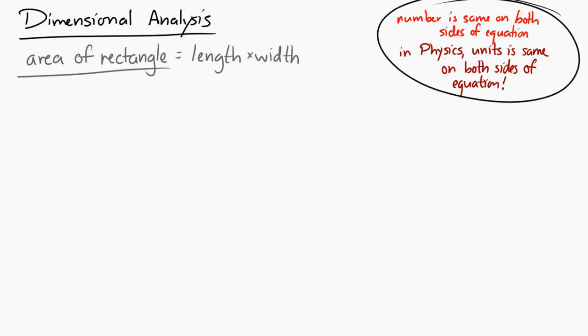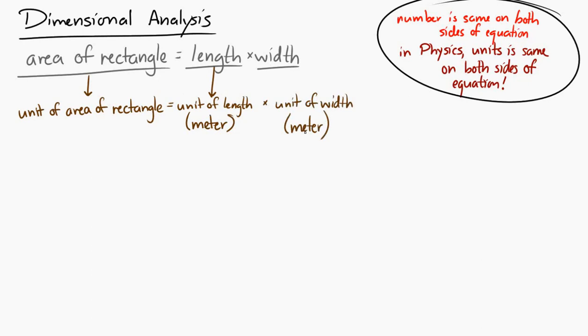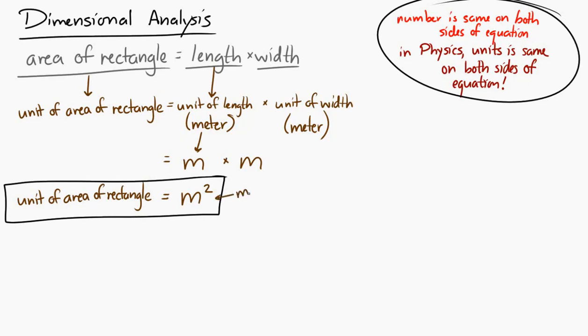So, the unit has to be the same on both sides of an equation. So, let's say that we want to figure out the area of a rectangle. We know the area of a rectangle is length times the width. Okay. So, what's the unit of area? Well, the unit has to be the same on both sides of the equation. The unit of length is meter. The unit of width is meter. So, on the right hand side of this equation, we have meters times meters. We have meters squared. So, the unit of area has to be the same thing. The unit of area is a meter squared or square meter.